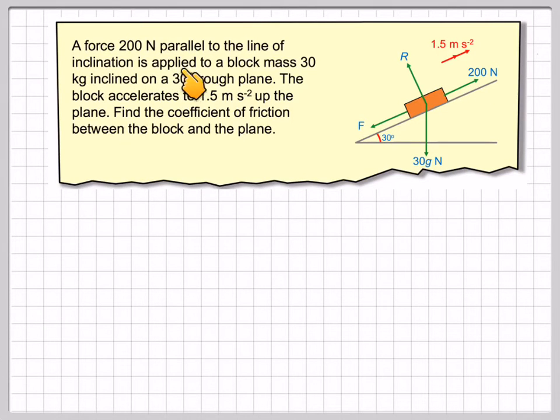A force of 200 newtons parallel to the line of inclination is applied to a block of mass 30 kilograms inclined on a 30 degree rough plane. The block accelerates up to 1.5 meters per second squared up the plane. Find the coefficient of friction between the block and the plane.